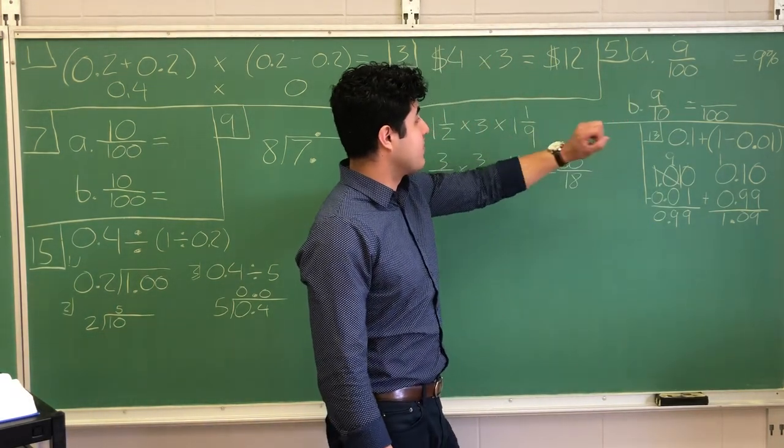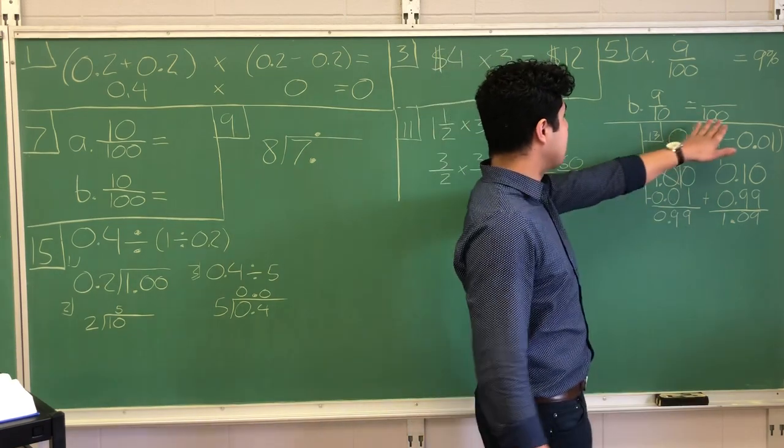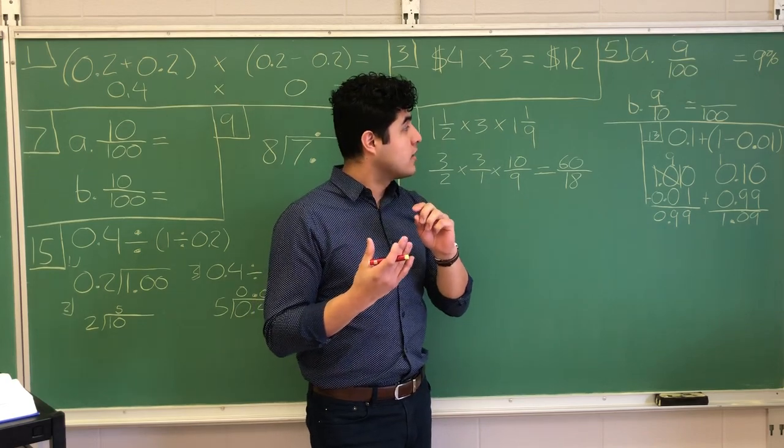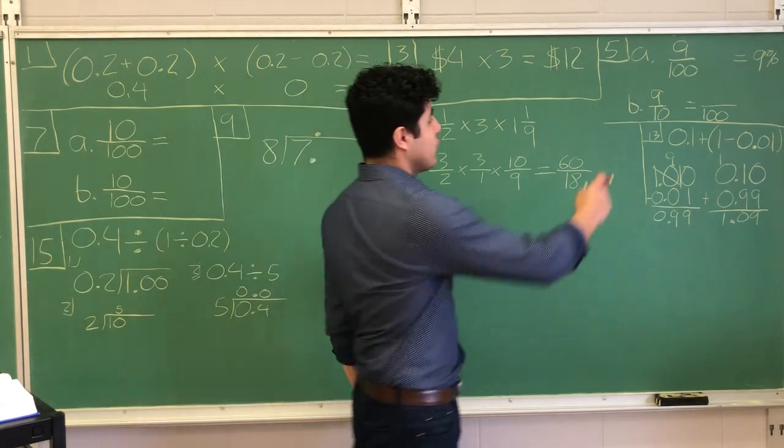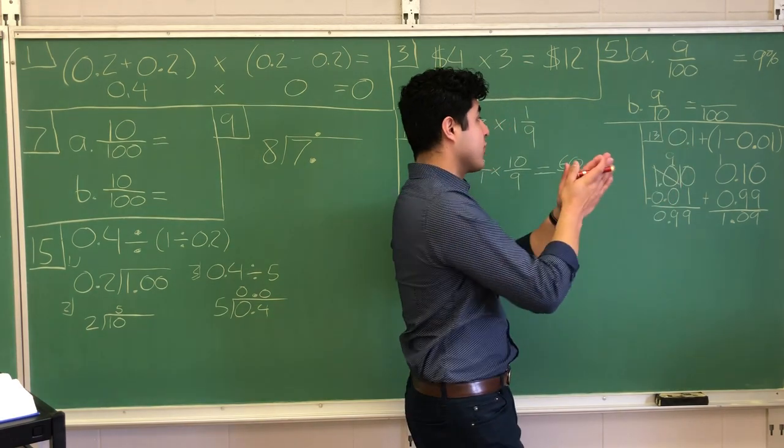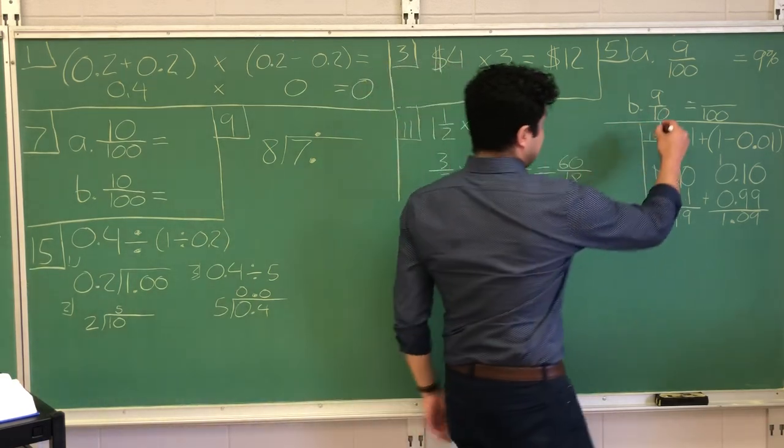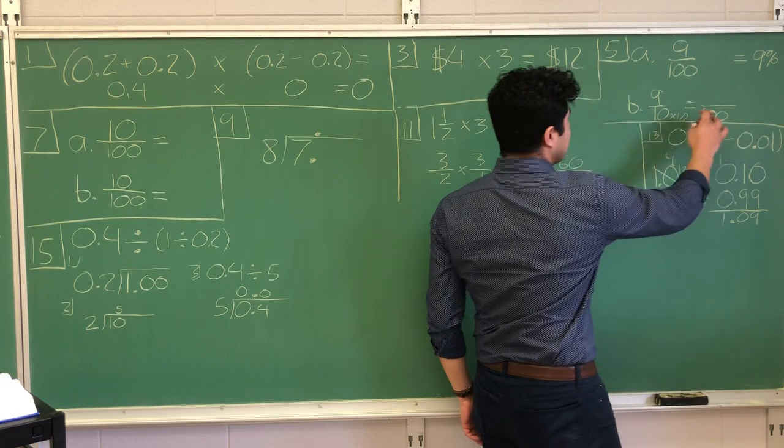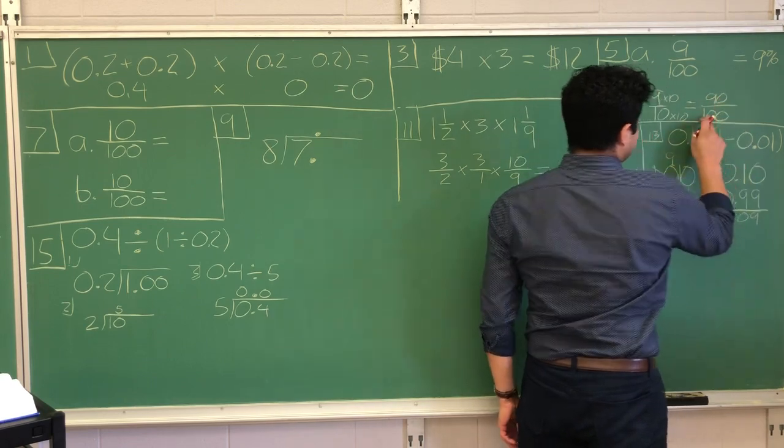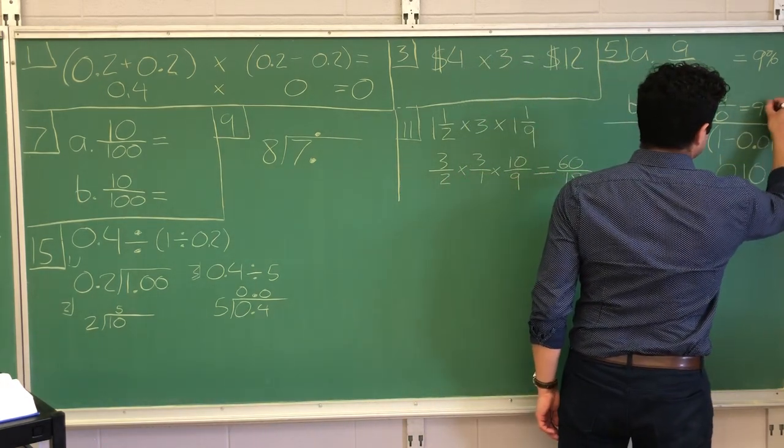All right, but next, letter B. We are asked, write 9 tenths as a percent. So I went ahead and set up my problem, like I usually do when trying to find the numerator for a fraction that has the denominator of 100. So I've got 9 tenths equals 100 over blank. My numerator, I'm trying to find out what the numerator would be. So 100 times what equals 10? I'm sorry, 100. I see that 10 times 10 equals 100. So whatever I did to my denominator, I'm going to do to my numerator. So 9 times 10 equals 90. So now I've got a fraction that has a denominator of 100. So now my numerator would be my percentage, 90%.